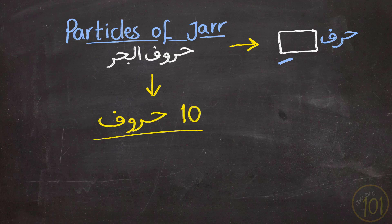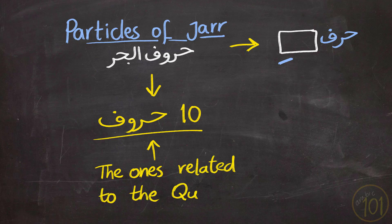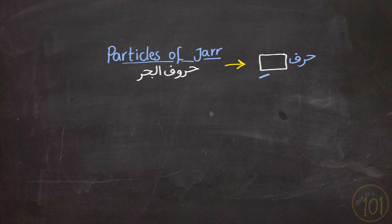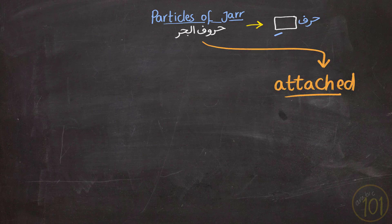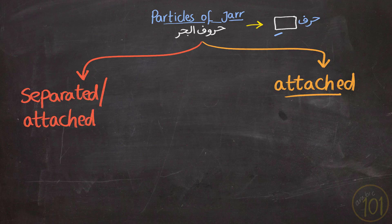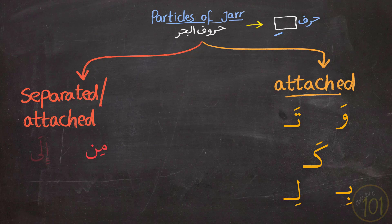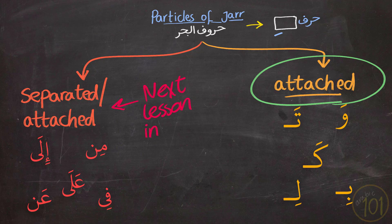There are 10 particles in total that are closely related to the Quran — meaning there are more than 10, but these are the ones we'll focus on. Each one of these 10 has one or multiple related meanings, which we will discover one by one. Some particles are only attached to another word, and some can be used separately or attached. The attached ones are all single letters. The next group, which can be attached or used separately, will be discussed in the next lesson insha'Allah.